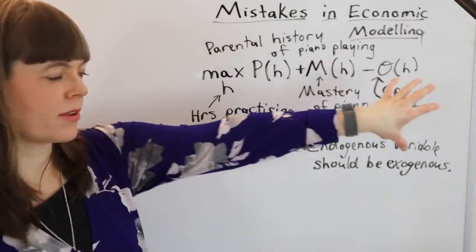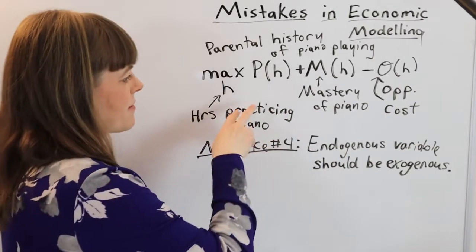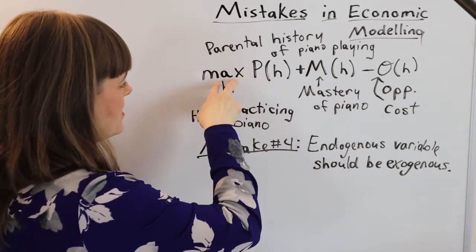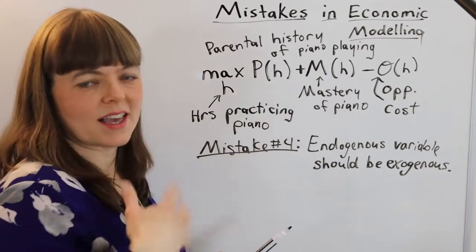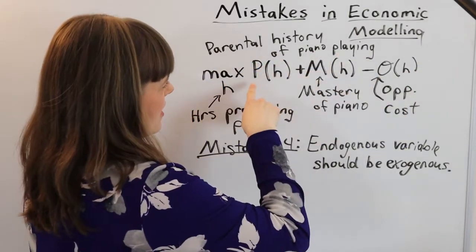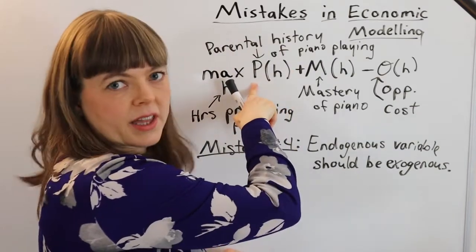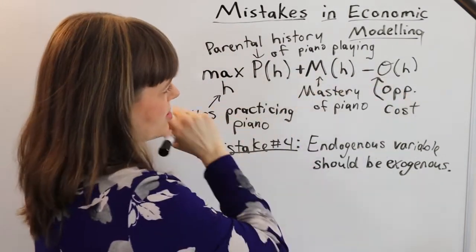So here's an example of a model a student has built, at least hypothetically, that has this problem. So let's try to fix it. We have hours of piano practice, perhaps this is kids practicing piano. And our objective function has parental history of piano playing. And of course, it's mastery and opportunity cost as well.